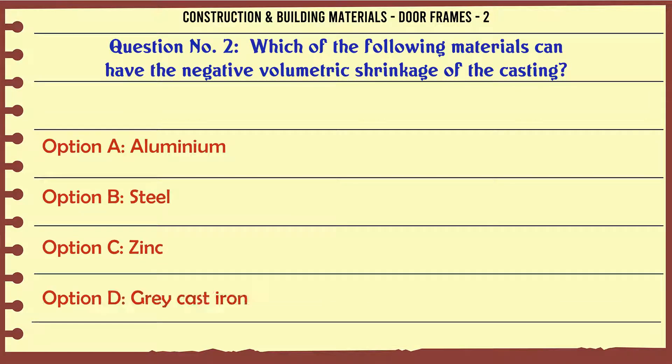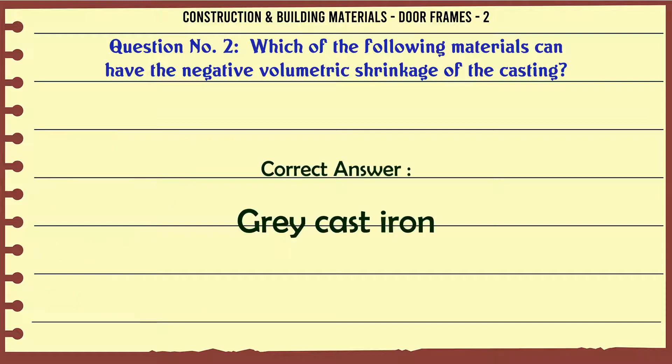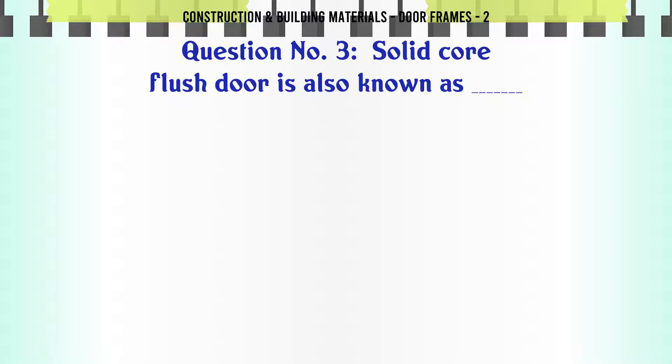Question 2: Which of the following materials can have the negative volumetric shrinkage of the casting? A. Aluminium, B. Steel, C. Zinc, D. Gray cast iron. The correct answer is gray cast iron.